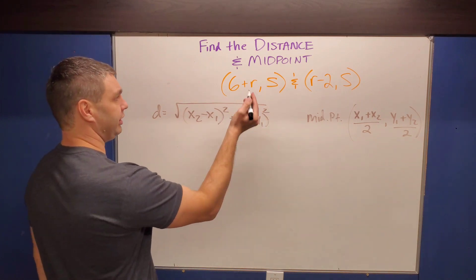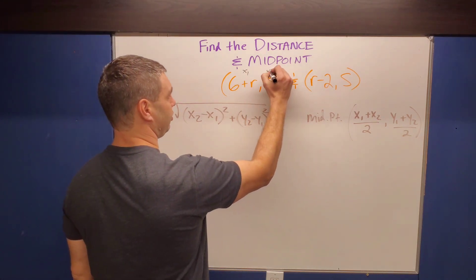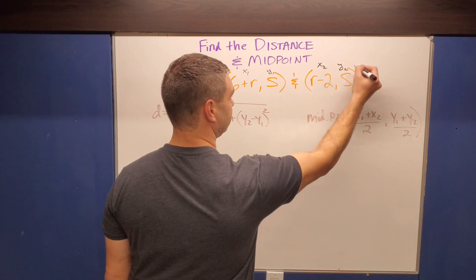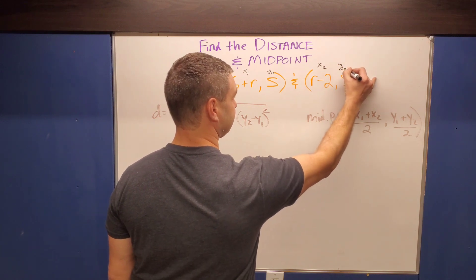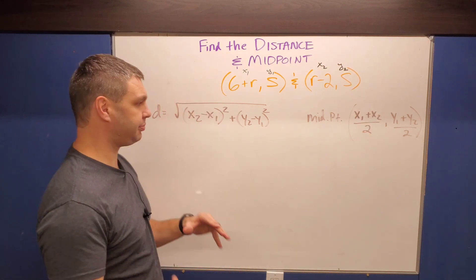So let's take those again, if you want to label them as your X one, Y one, X two, and Y two for your different X, Y points, go ahead and do that. And then let's put them into our formulas.